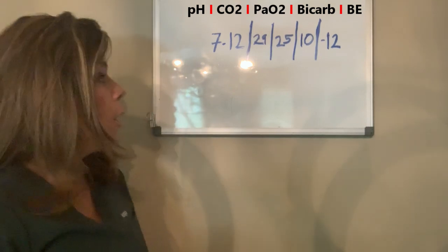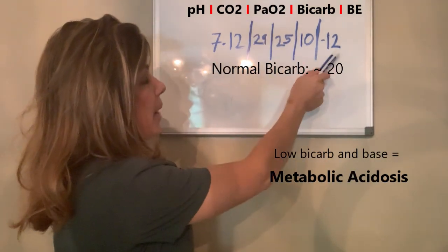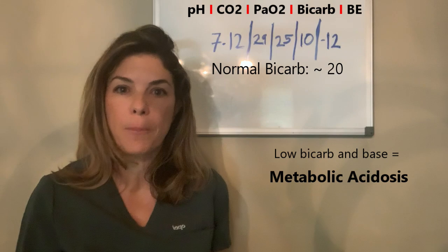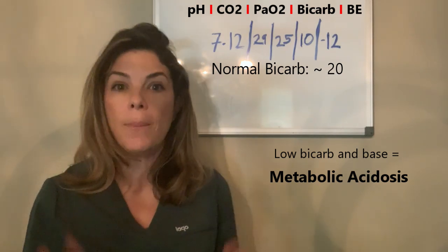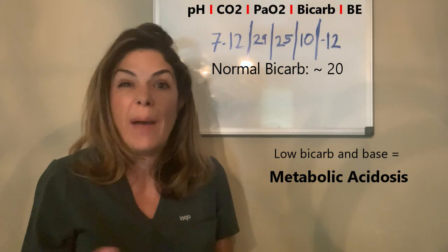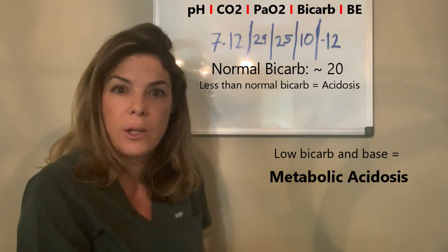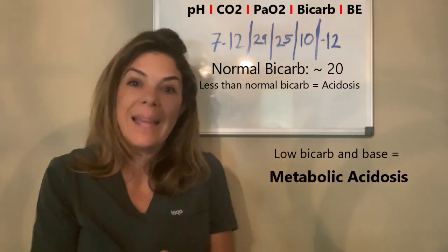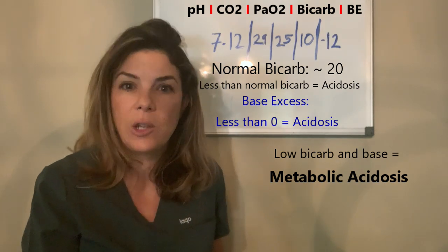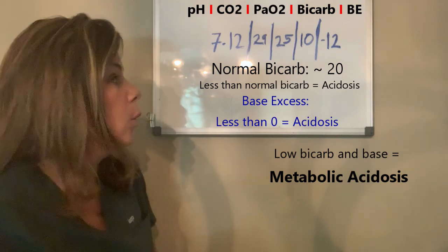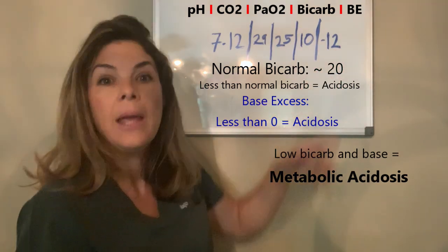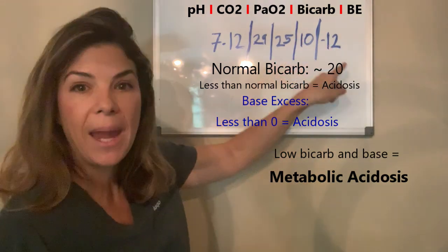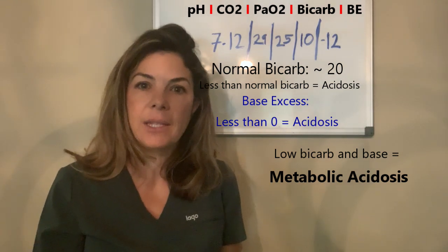Let's confirm this. We look at the bicarb and the base. The bicarb here is 10 — it should be around 20. Bicarb is an alkali, so if you have less of it, you have an acidosis. The base is a calculated number: anything less than zero suggests acidosis, because it tells you how much bicarb you'd need to add to make it neutral. The combination of the low bicarb and the low base means you have a metabolic acidosis.